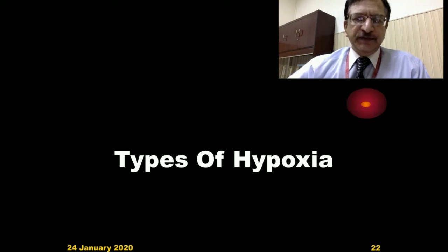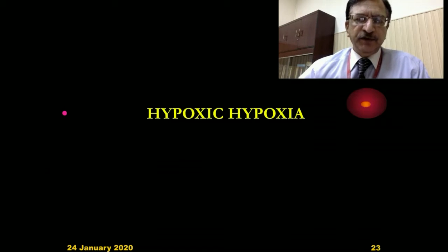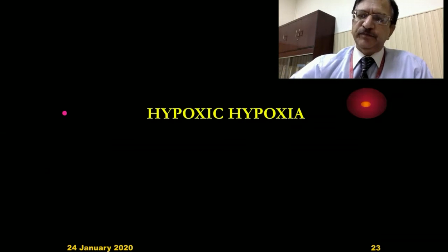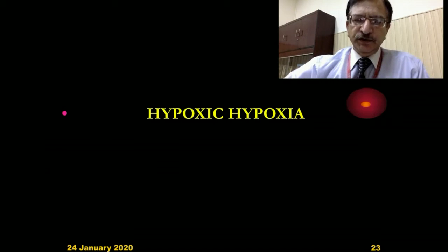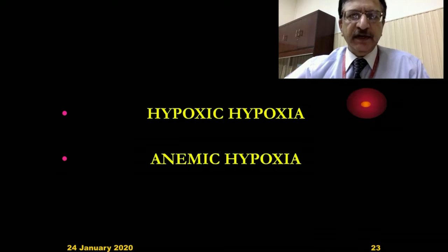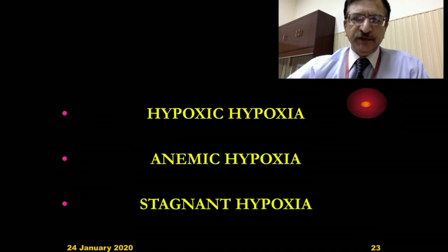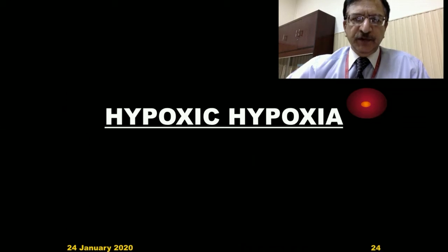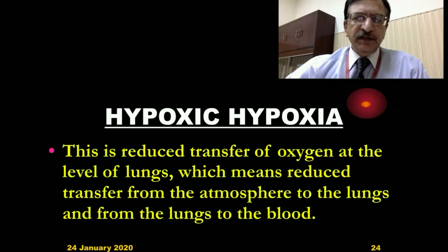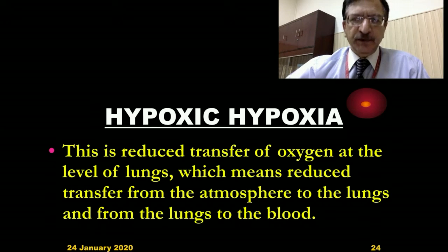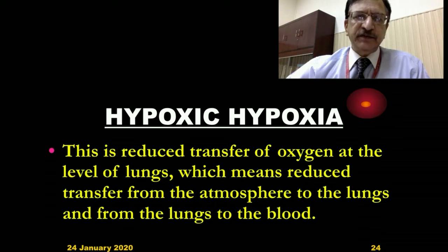Talking about the types of hypoxia — the reduced oxygen supply to the body and hence to the tissues — either it is hypoxic hypoxia, anemic hypoxia, stagnant hypoxia, or histotoxic hypoxia. Hypoxic hypoxia means there is reduced transfer of oxygen at the level of the lungs — reduced transfer from the atmosphere to the lungs and from the lungs to the blood. The concentration of oxygen in the environment is less, leading to less transfer of oxygen from the lungs to the blood.